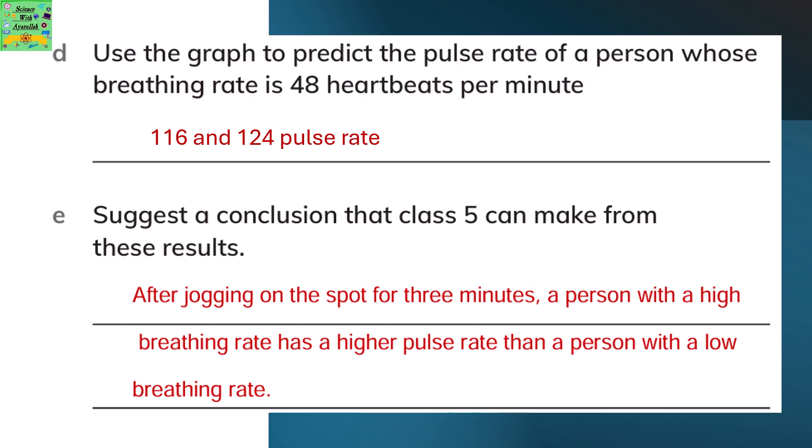Use the graph to predict the pulse rate of a person whose breathing rate is 48 breaths per minute. The pulse rate would be approximately 116 or 124 heartbeats per minute.